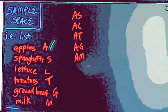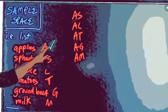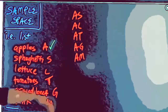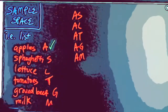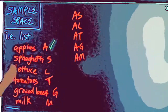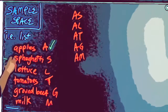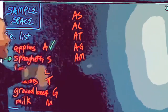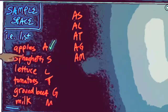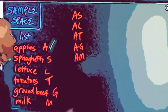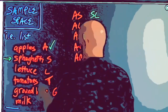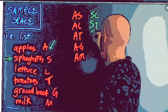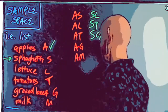This is what I mean about being systematic — first write out all the ways you could use your first item, then move to the second item. For spaghetti, I already have one way: spaghetti with apples. The other ways are spaghetti with lettuce, tomatoes, ground beef, and milk.